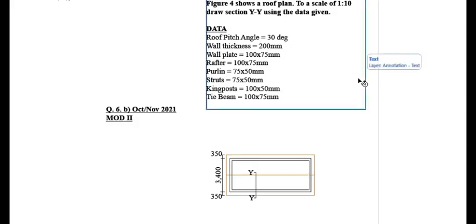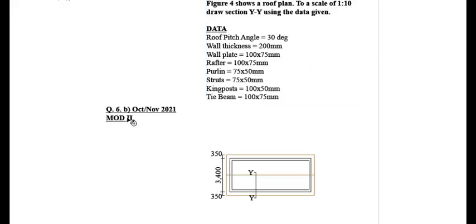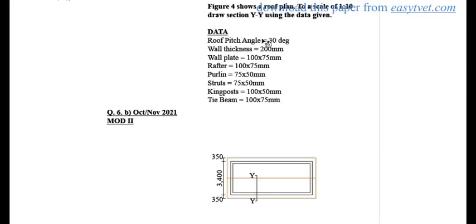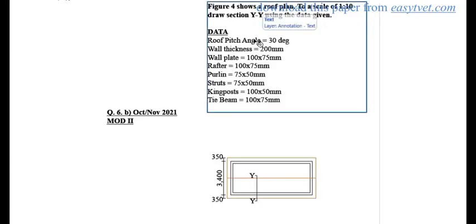Welcome back to Doings. In this tutorial I'm going to show you how to draw a section through a roof. We have a question from the first paper, October/November 2021, Module 2 paper. The question states: the figure shows a roof plan, and to a scale of 1 to 10, draw Section YY using the data given.